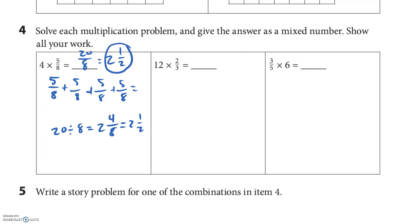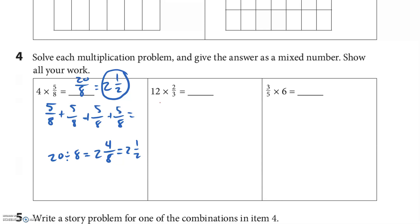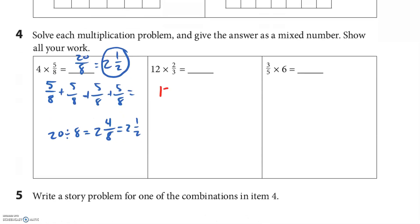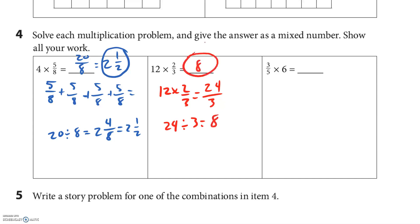12 times 2 thirds. So I'm not going to write 2 thirds 12 times. I'm actually going to multiply 12 times 2, that's 24. And remember the denominator just stays there, so the 3 is going to be there. 24 divided by 3 — I believe that's 8. So the answer is 8.